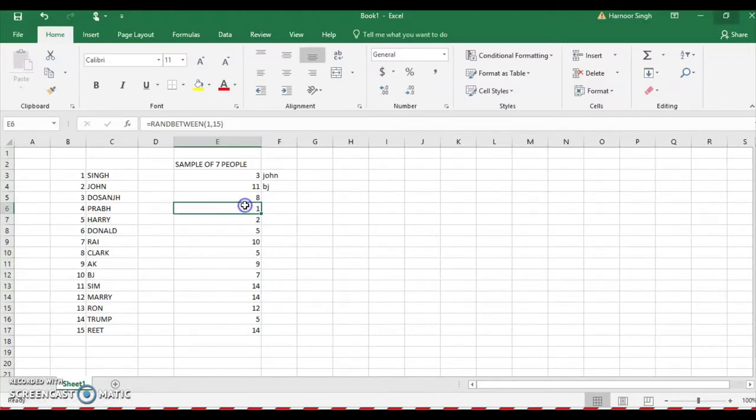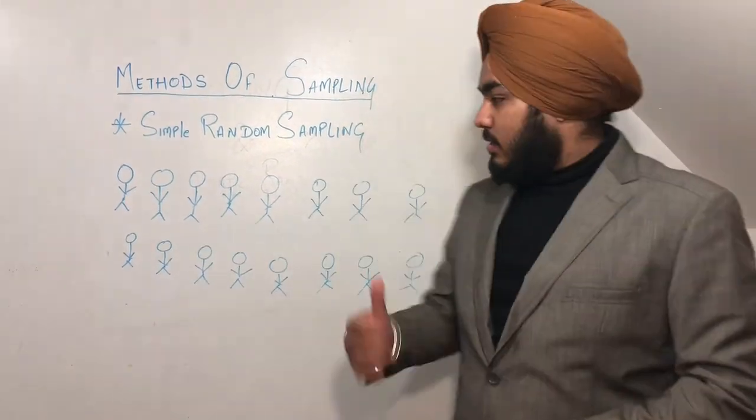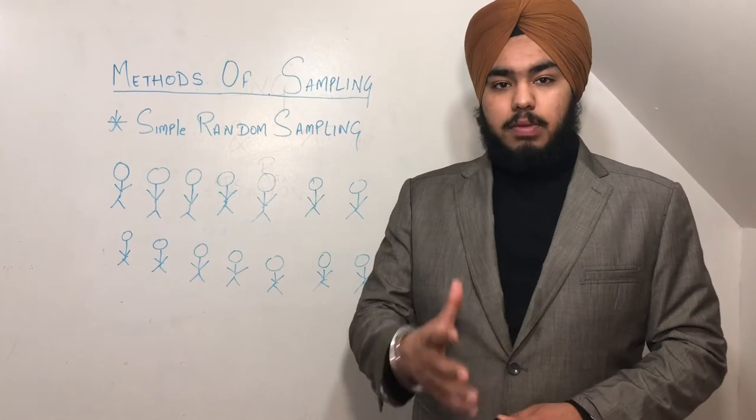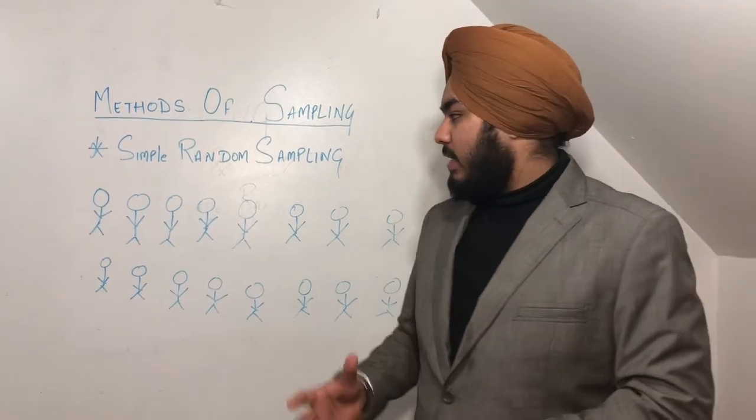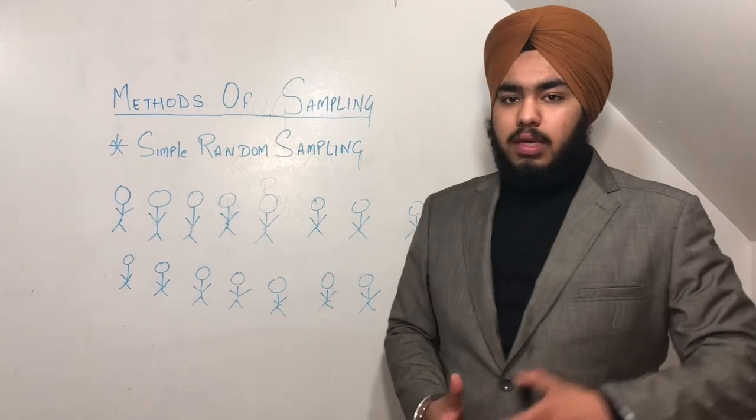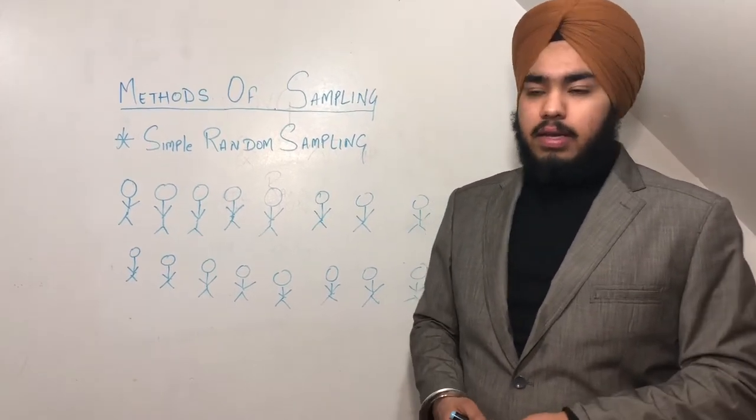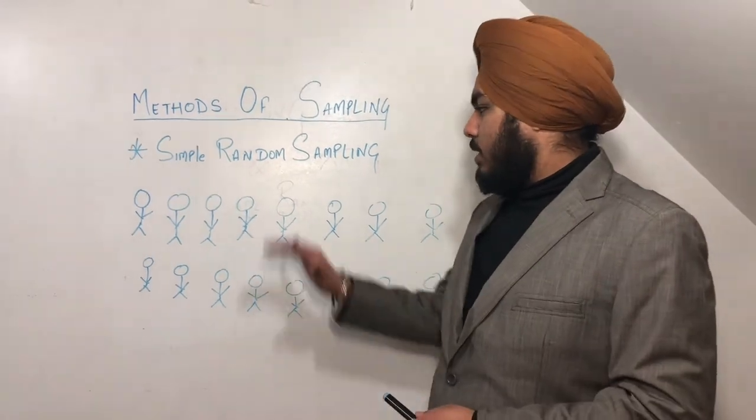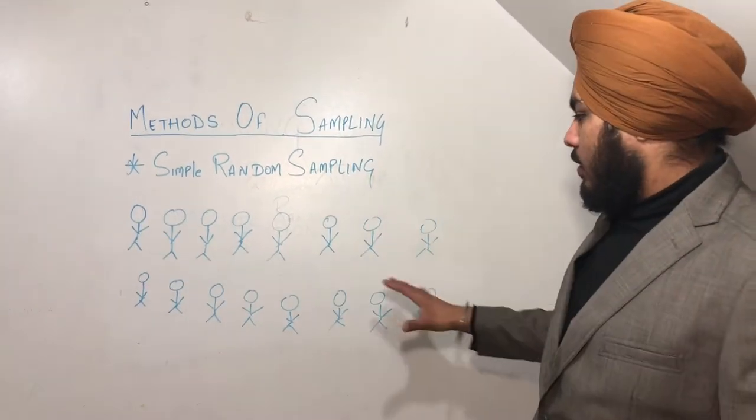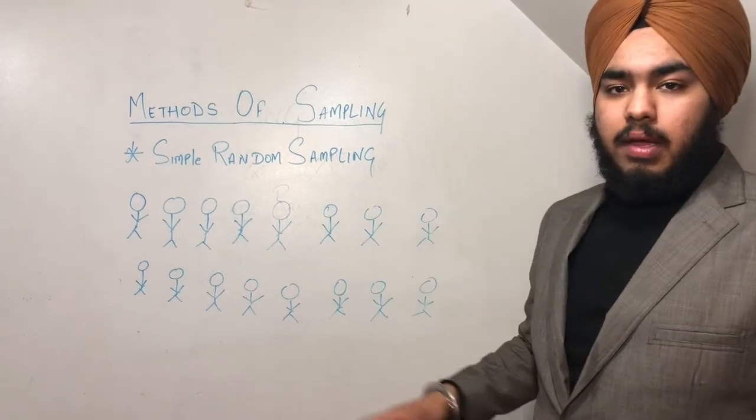In simple random sampling, I'm using a second example to explain. We need to pick out random samples - it can be anyone or anything. For example, if you talk about people living in a herd with a population of 16 people, and we need to randomly select four, it can be any one of them.